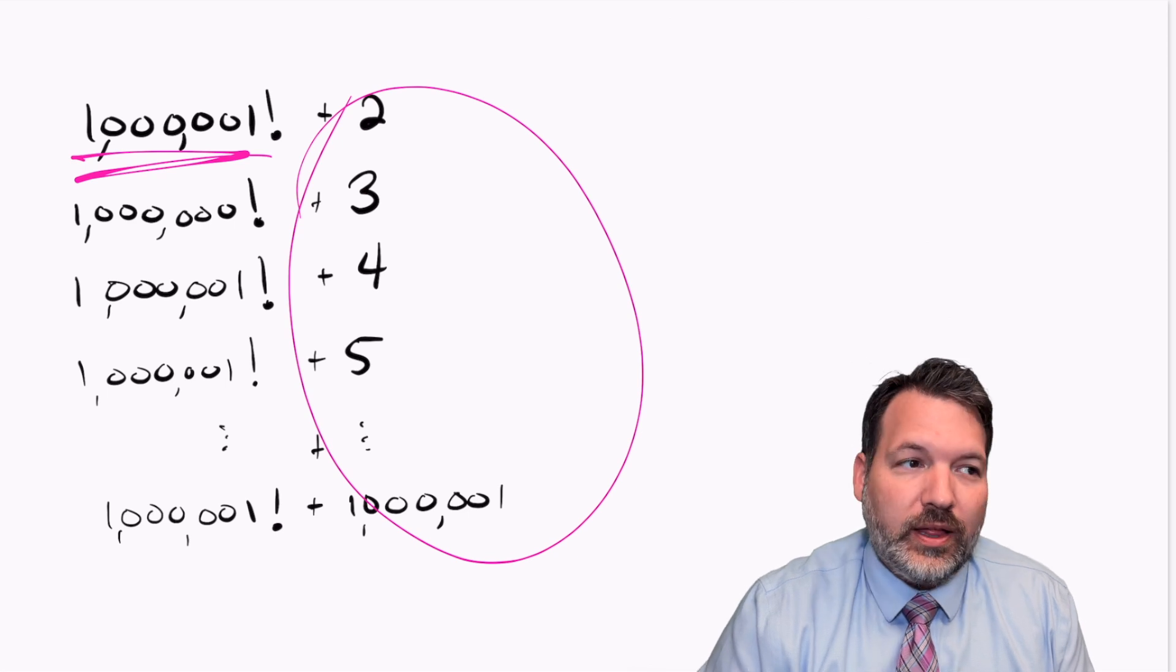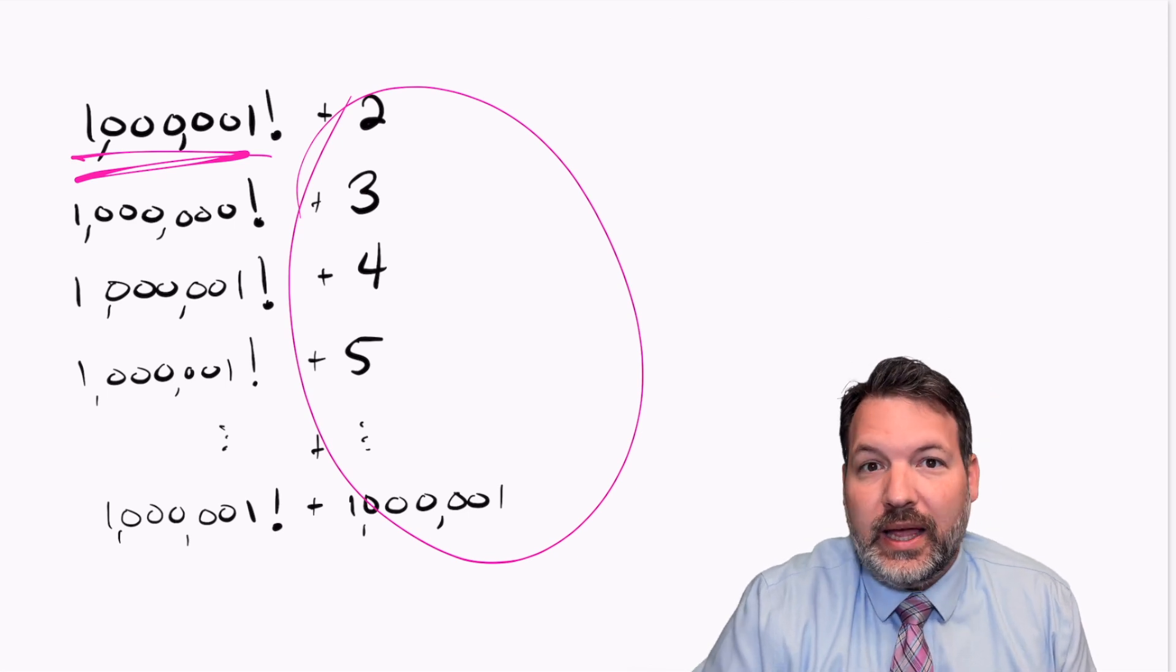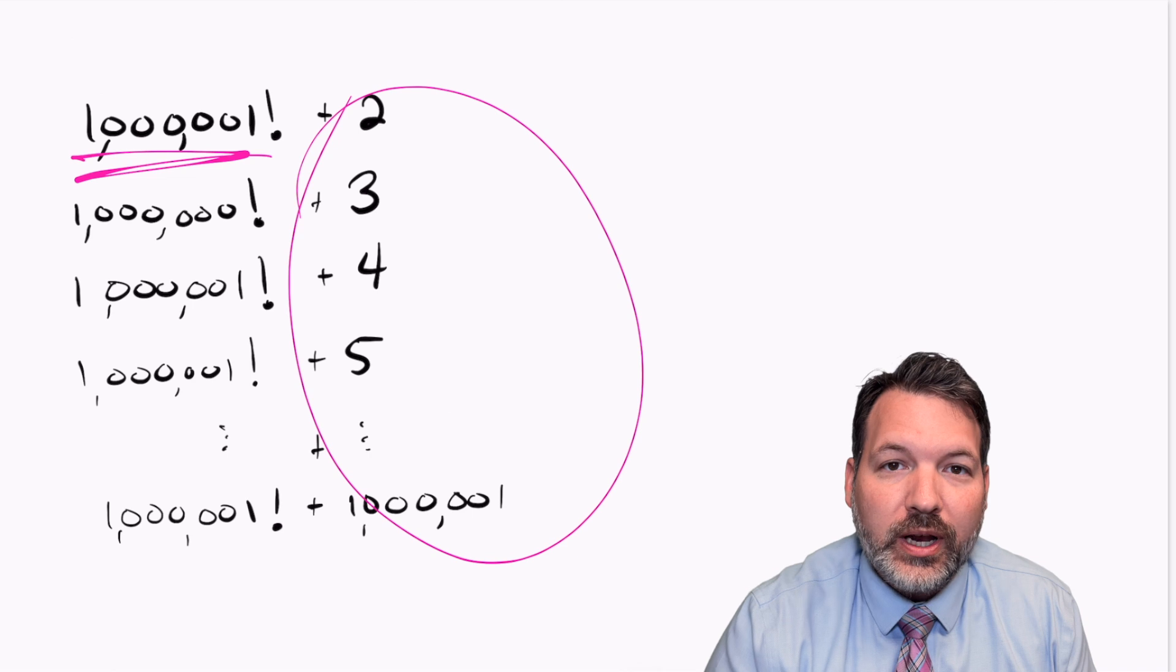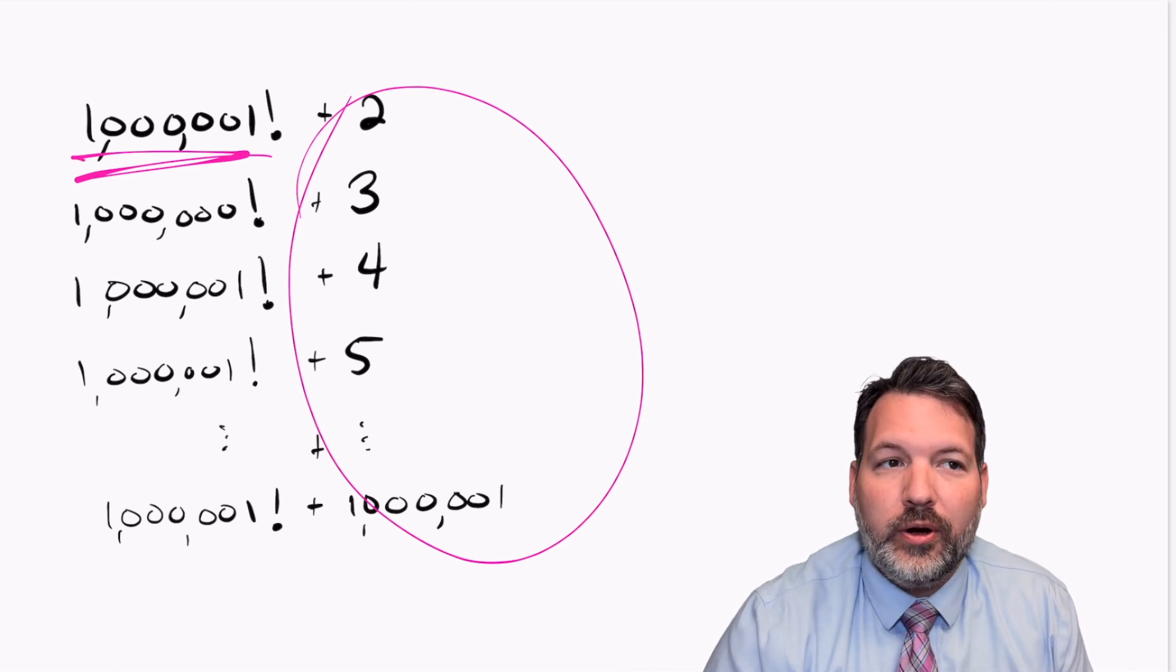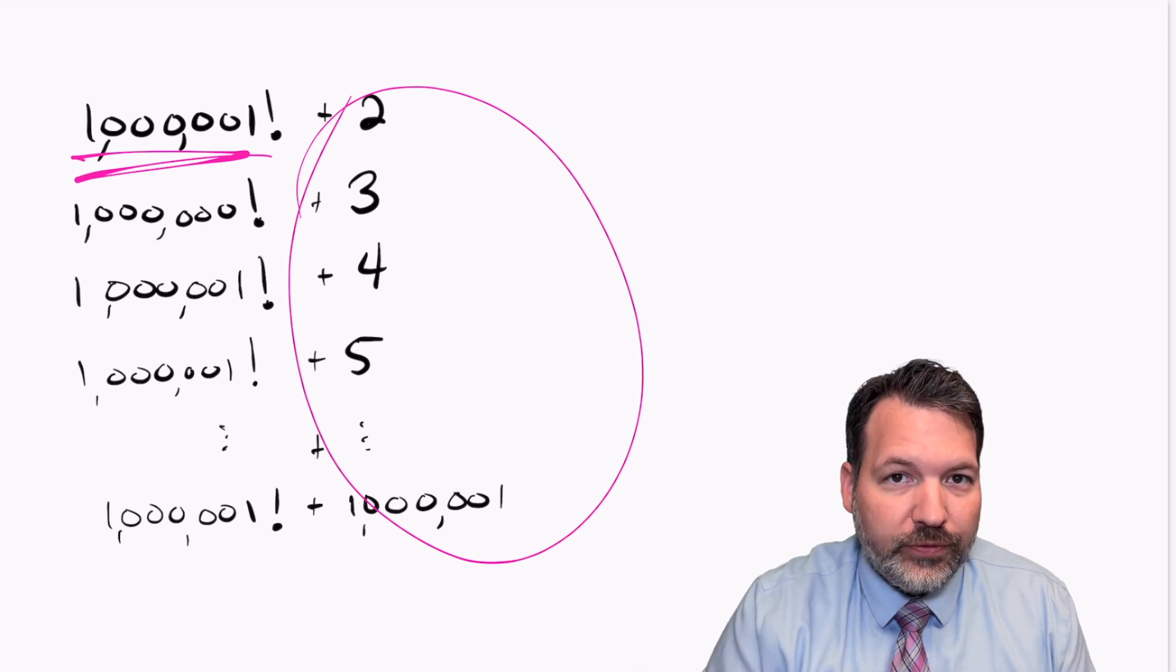It also gives us a good reason to think that the density of the primes gets less as we move further and further down the number line. If we know for sure there must be three composite numbers in a row, every time we see 4 factorial, remember that was 24, or a multiple of 4 factorial.